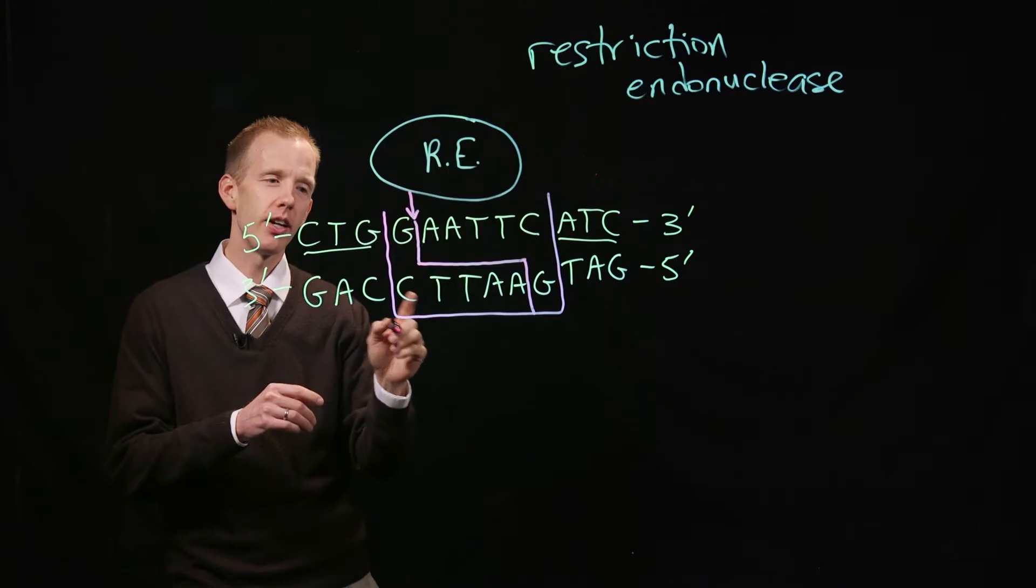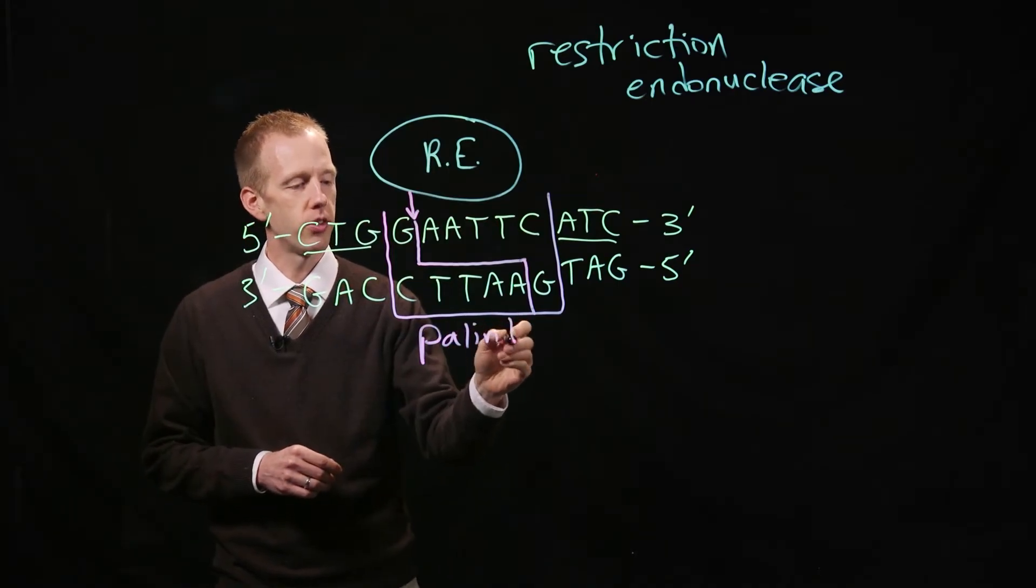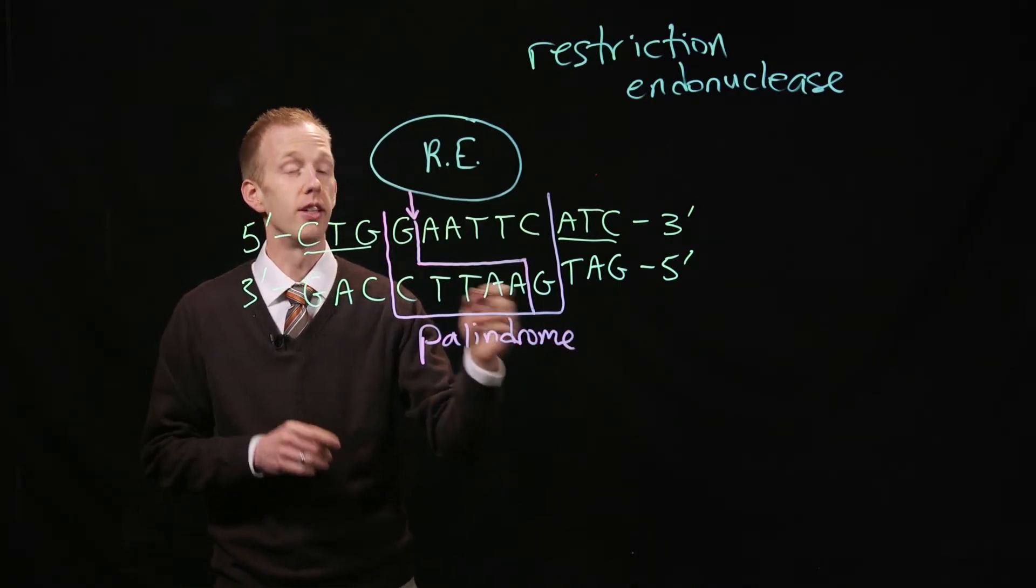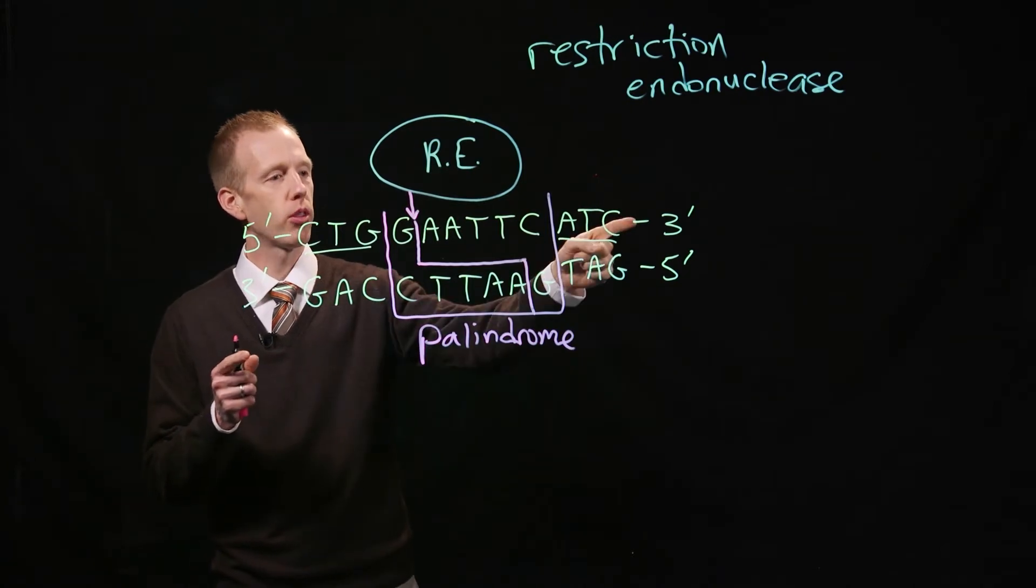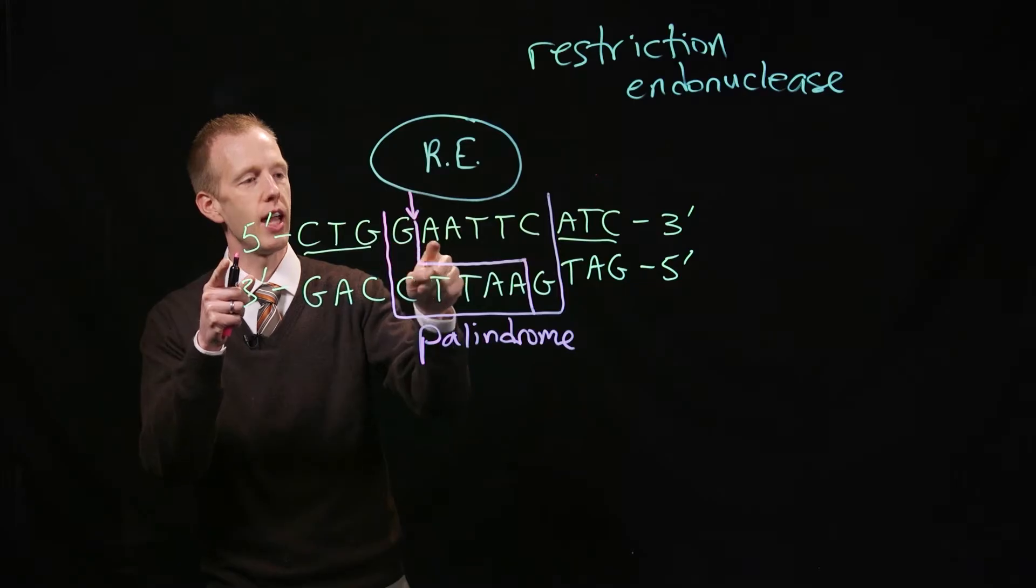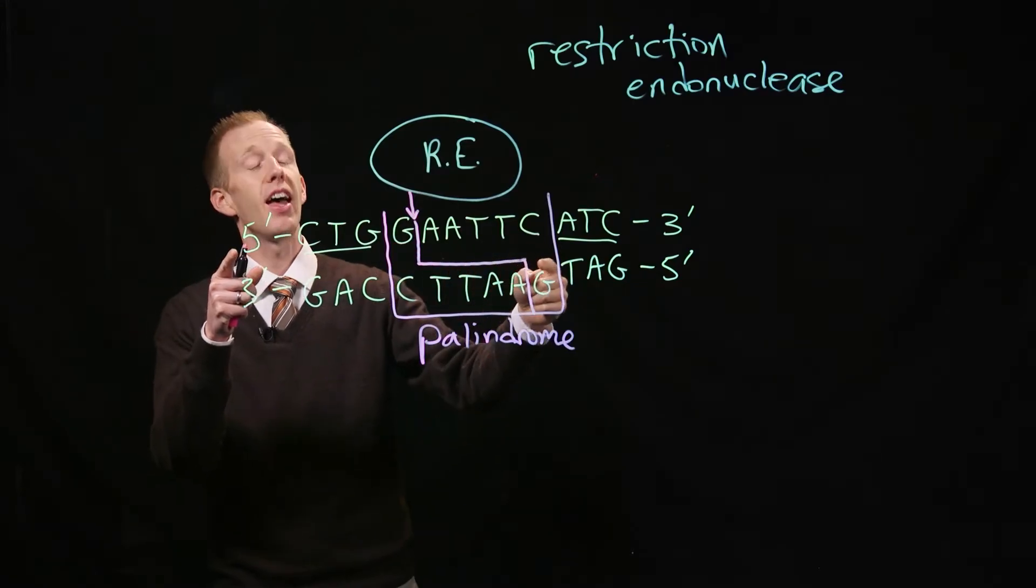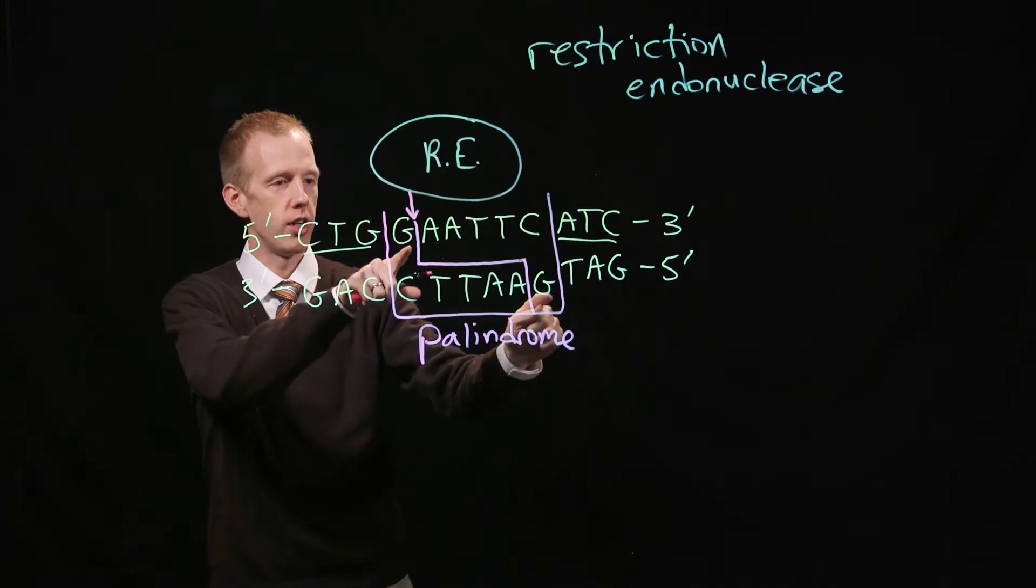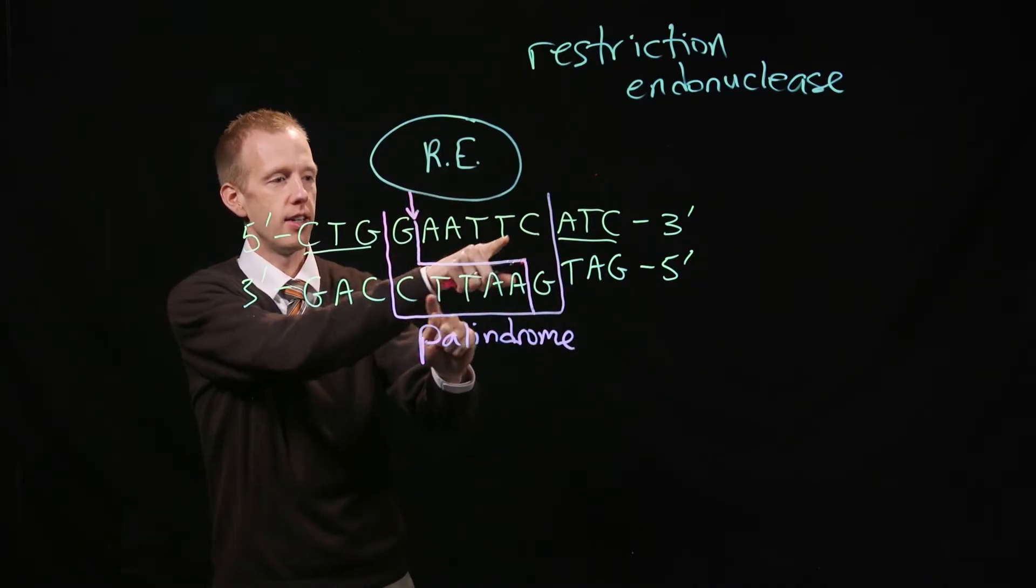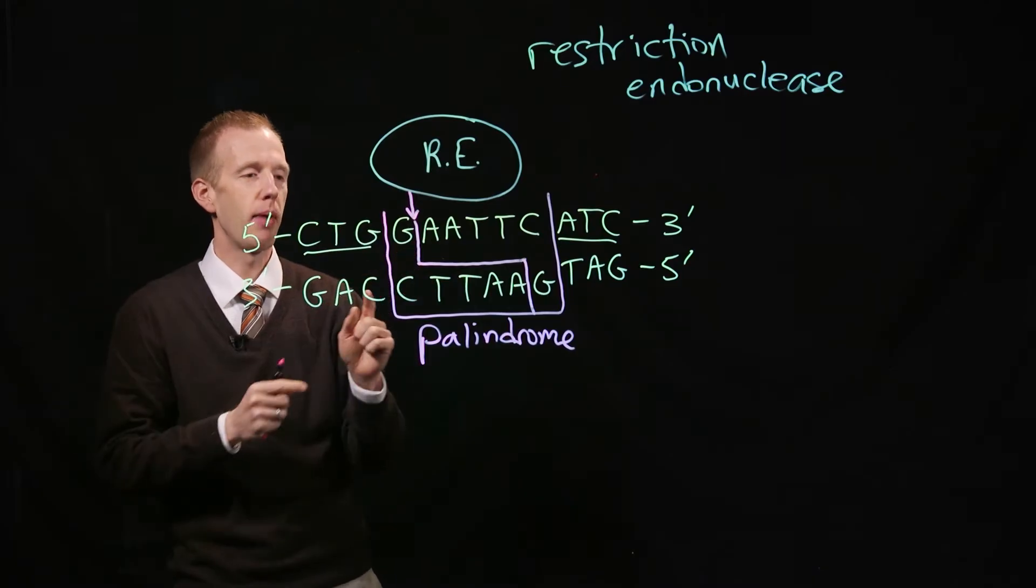You might realize that this sequence, when you look at the double-stranded sequence, is a palindrome. When you read from five prime to three prime on the top strand, this is G-A-A-T-T-C. And this is the same sequence when you read the other strand of DNA from five prime to three prime. G-A-A-T-T-C. So that's a palindrome.